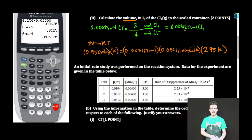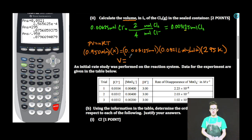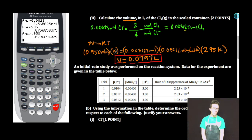Calculator: times 0.0821, times 295, divided by 0.950. Volume equals 0.0797 liters. Showing my work, feeling good about it.